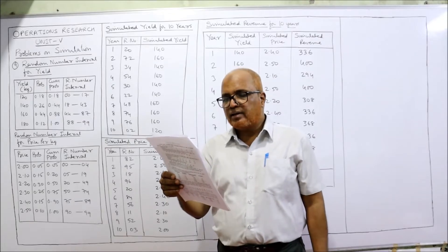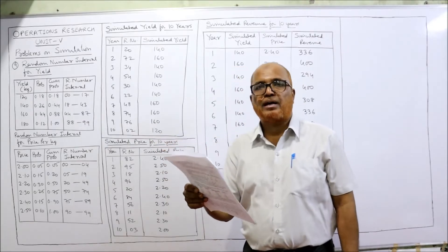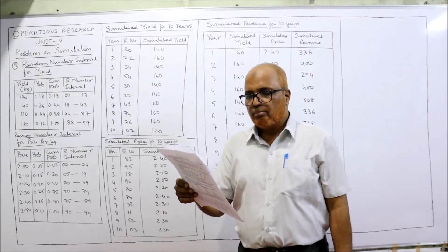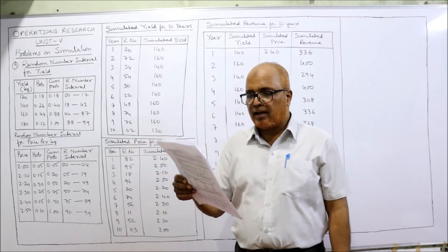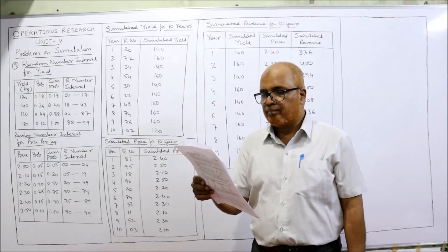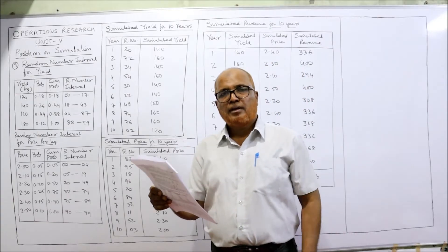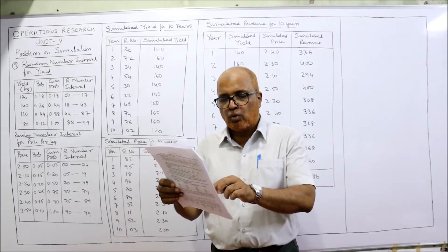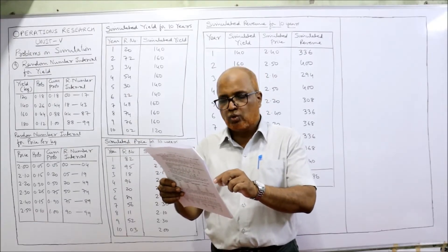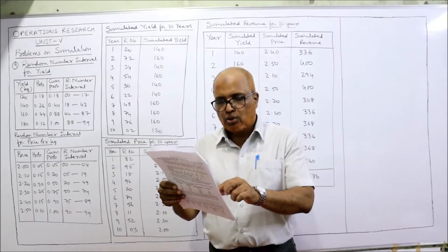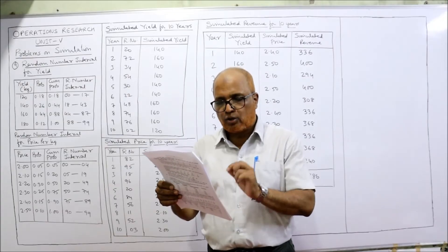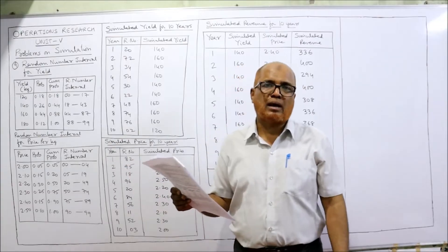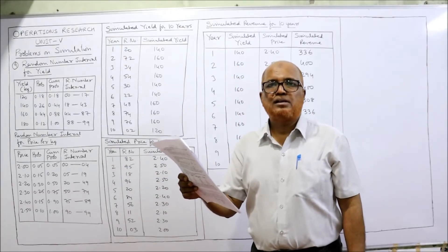She is also interested in the effect of market price fluctuations on the cooperative's farm revenue. She estimates the per-kilogram prices of corn, which also fluctuate. The prices range from 2.00, 2.10, 2.20, 2.30, 2.40, to 2.50 rupees per kilogram, and the respective probabilities are given.